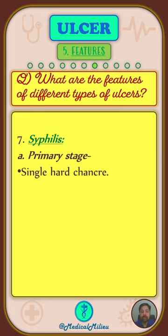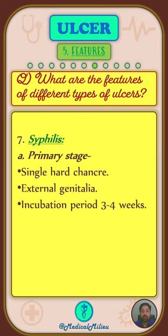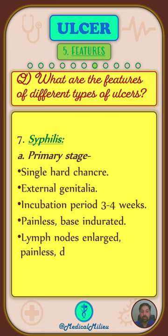In the primary stage of syphilis, there is a single hard chancre which occurs over the external genitalia. After an incubation period of 3-4 weeks, the ulcer is painless and the base is indurated. The lymph nodes are enlarged, painless, discreet, and they do not separate.